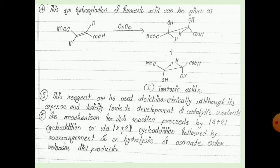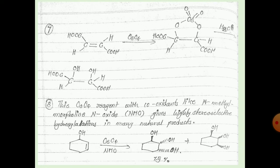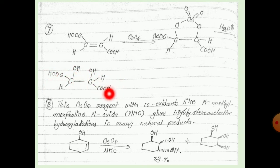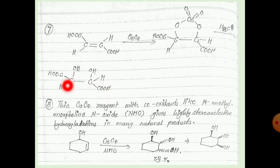The mechanism gives the diol product. In the next step, with fumaric acid — which has trans COOH groups — the osmite ether is formed, and then simple hydrolysis with H2O gives the osmium diol, with the COOH groups remaining opposite each other.